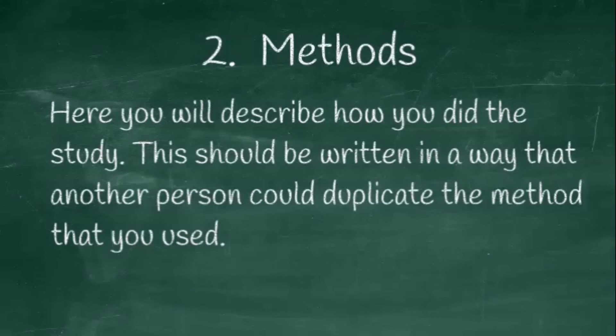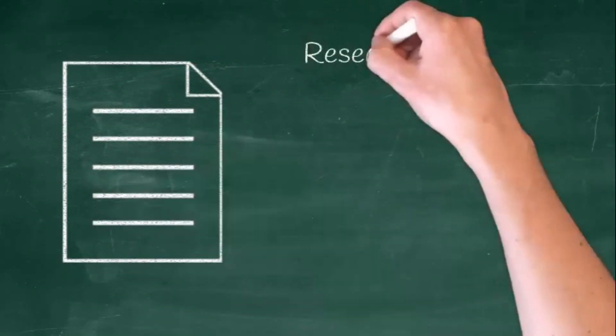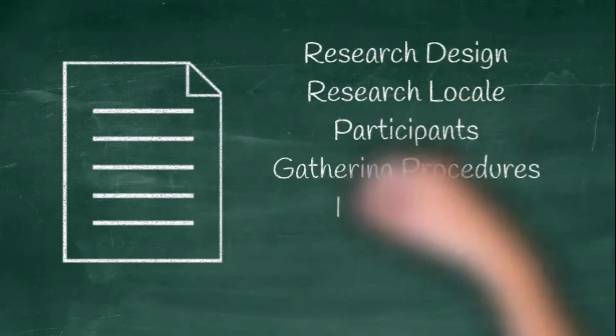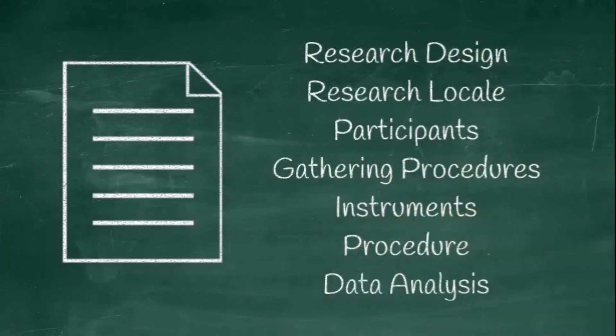There are usually a few sections in this part of your paper and these are the research design, research local, participants, scattering procedures, instruments, and data analysis.